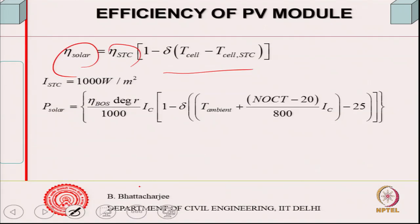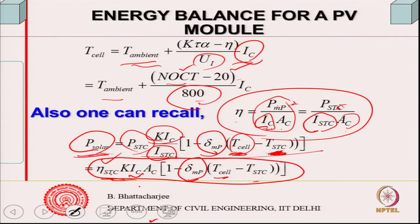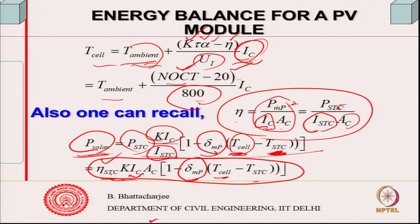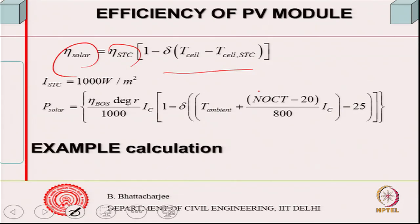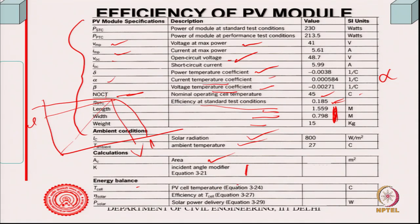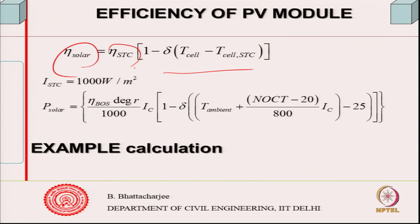Then T_cell can be found out. T_cell is calculated from the expression: T_cell equals ambient condition plus a term involving K, tau (transmittivity), alpha (absorptivity), efficiency, incident radiation, and U. These empirical constants and tau-alpha values should be known to me. Alternatively, T_cell can be found from NOCT at 800 W/m² and the given incident radiation.